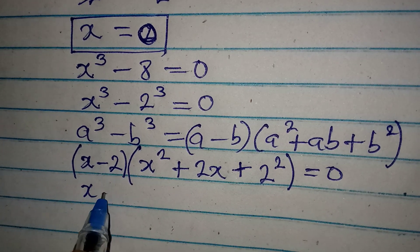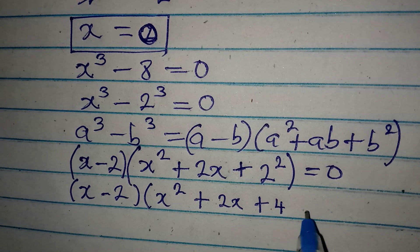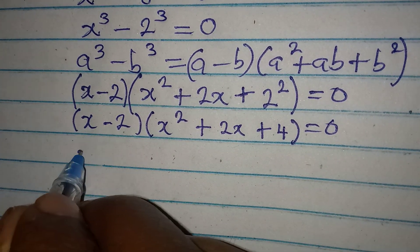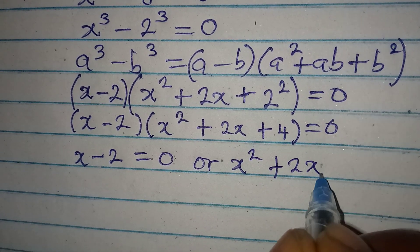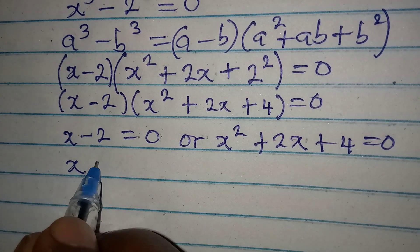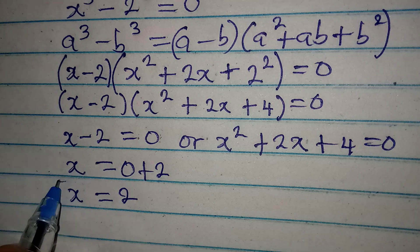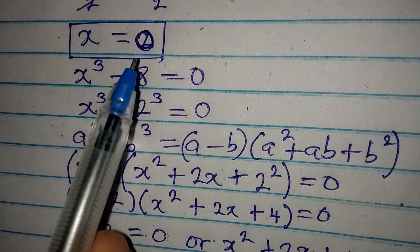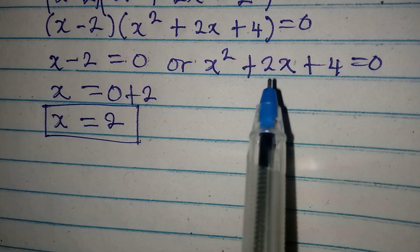So we have (x minus 2)(x² plus 2x plus 4) equals 0. Applying the zero product rule, x minus 2 equals 0 gives us x equals 2. That is our second value — first value x equals 0, second value x equals 2.